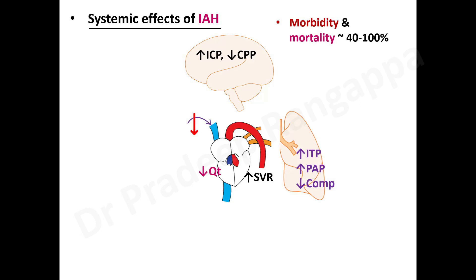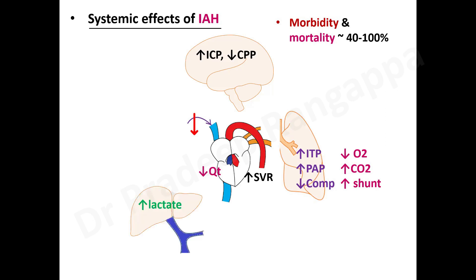In the lungs, gas exchange is compromised — as seen in pancreatitis, worsening IAH makes patients more hypoxemic and tachypneic. Intrathoracic pressure increases, pulmonary artery pressure increases, and they develop an ARDS-like situation with reduced lung compliance, hypoxemia, hypercapnia, and increased shunt fraction. In the liver, hypoperfusion leads to increased lactate and the portal circulation also becomes compromised.